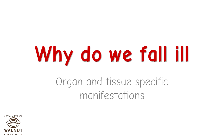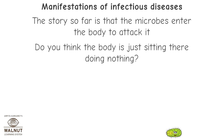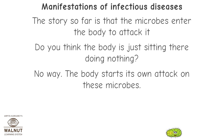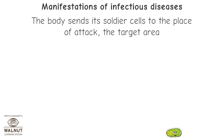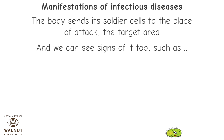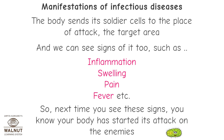Why do we fall ill? Organ and tissue-specific manifestations of infectious diseases. The story so far is that microbes enter the body to attack it. But the body is not just sitting there doing nothing — the body starts its own attack on these microbes. That is the immune system at work. The body sends its soldier cells to the place of attack, and we can see signs of it: inflammation, swelling, pain, fever, etc. So next time you see these signs, you know your body has started its attack on the enemies.